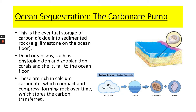Finally, we have the carbonate pump. The best way to remember this one is carbonate rock and carbonate dead organisms. This is the eventual storage of carbon dioxide into sedimented rock, where carbon is transferred into sedimented rock by organisms. Dead organisms like phytoplankton, zooplankton, corals, and shells fall to the ocean floor. They contain carbon dioxide, compress over time, and being rich in calcium carbonate, they form limestone rock over time, transferring that carbon into rock. That's deep ocean, long-term storage of carbonate.